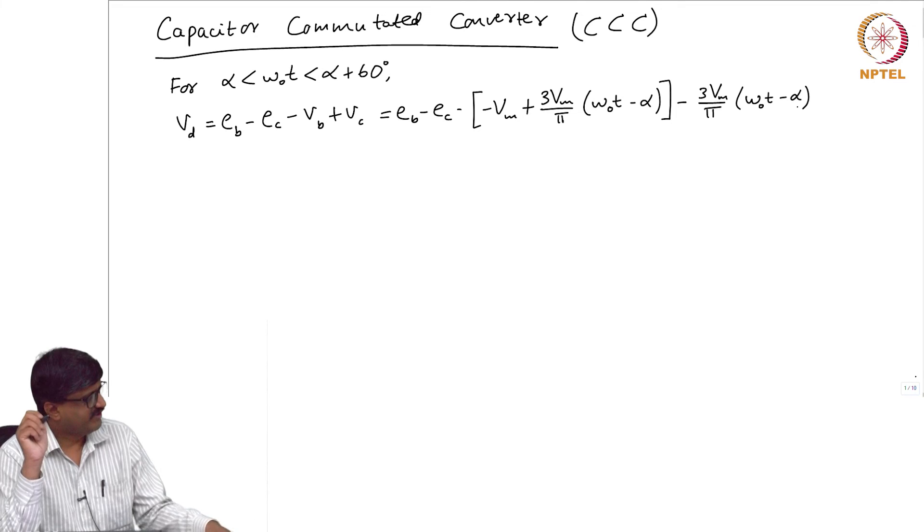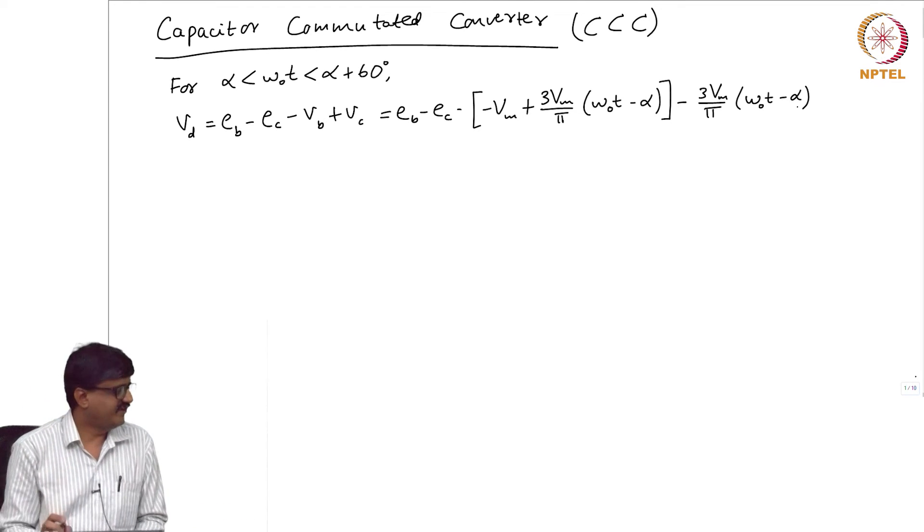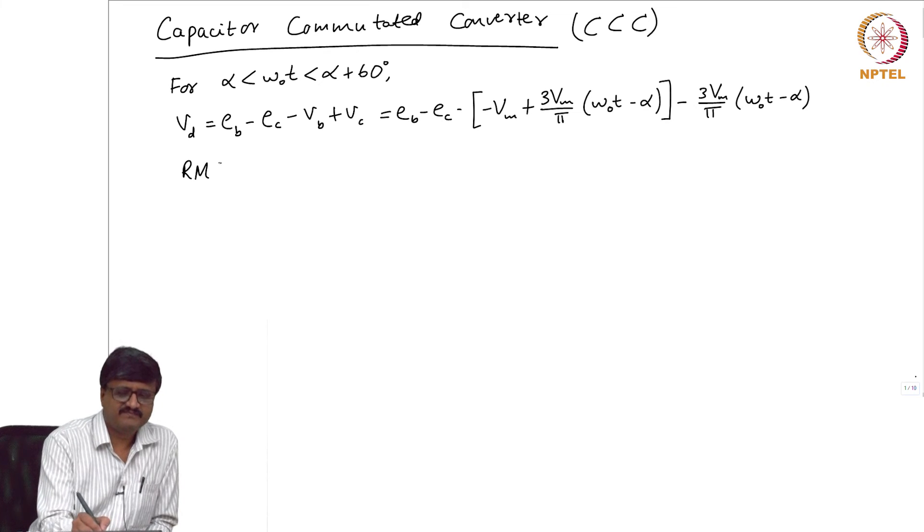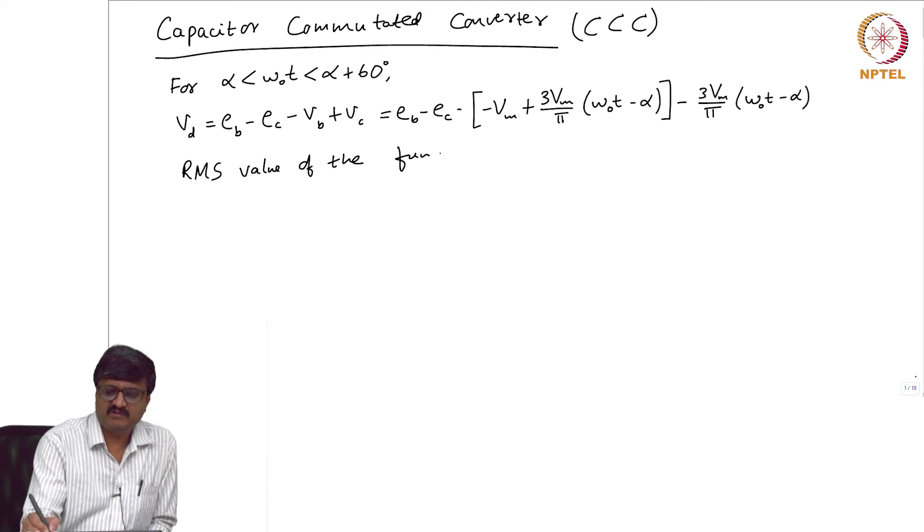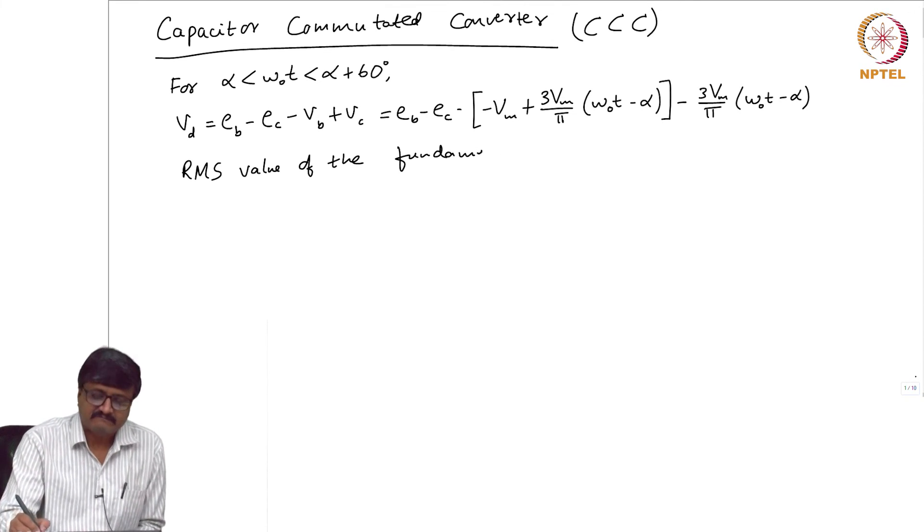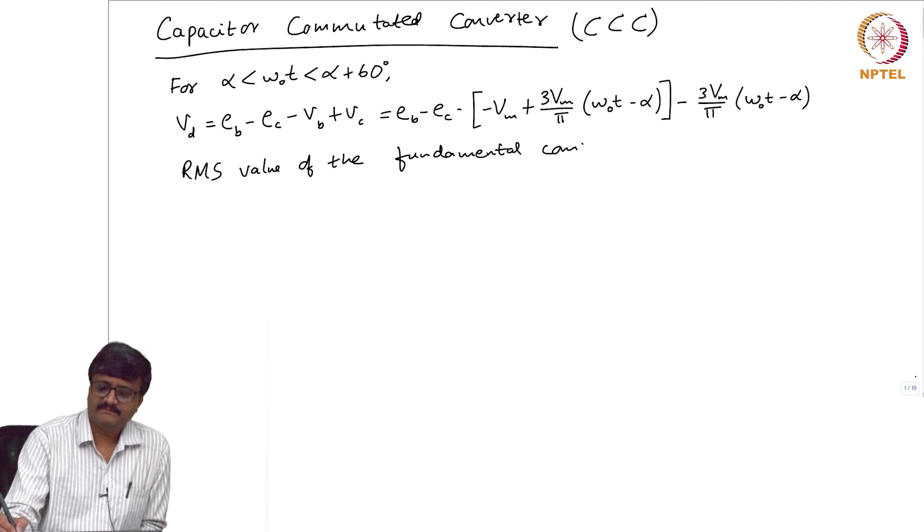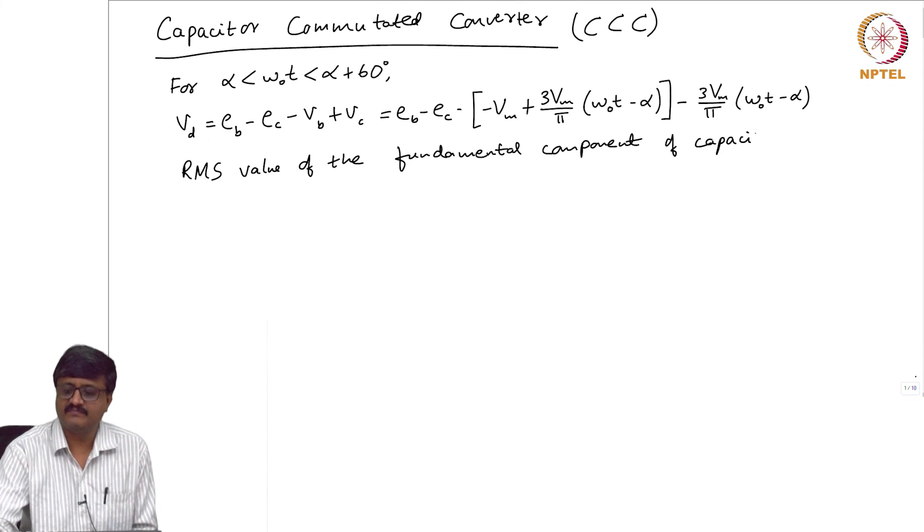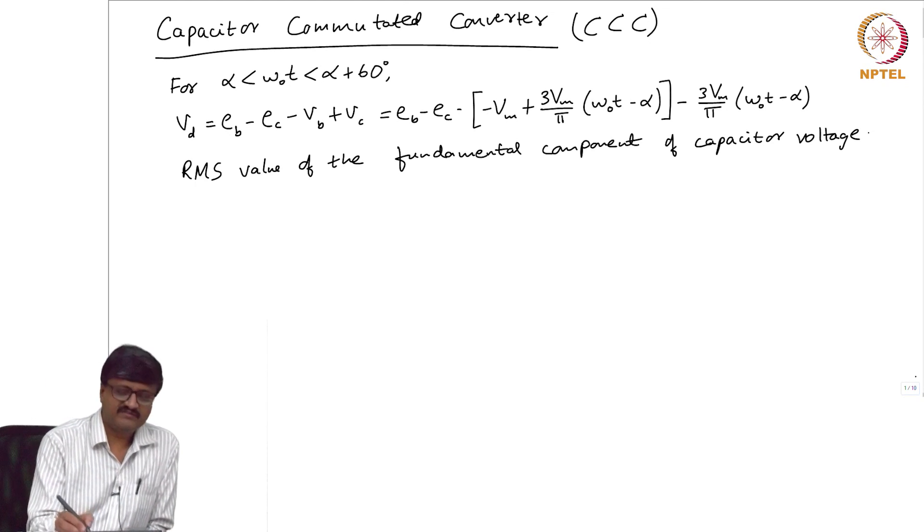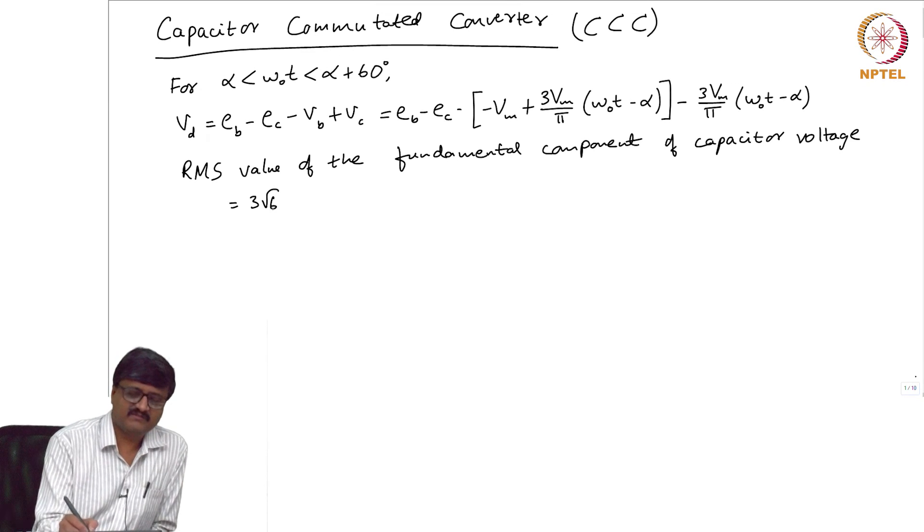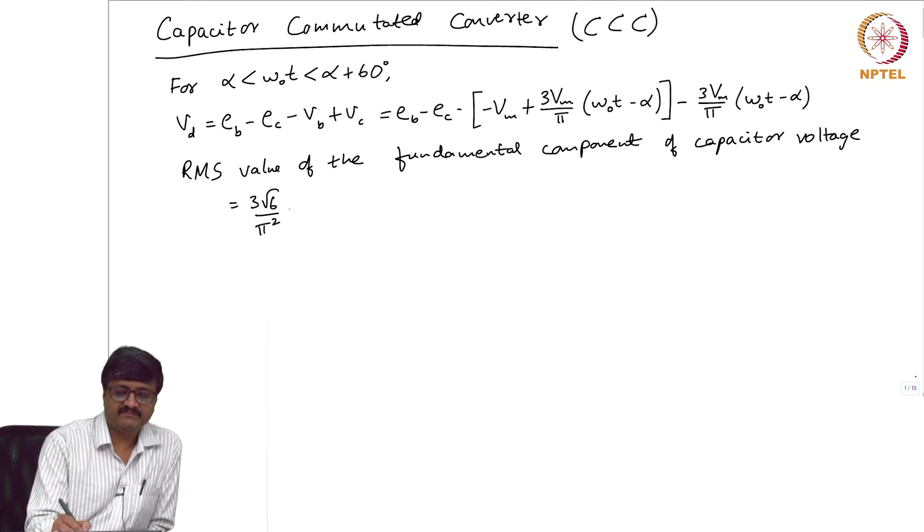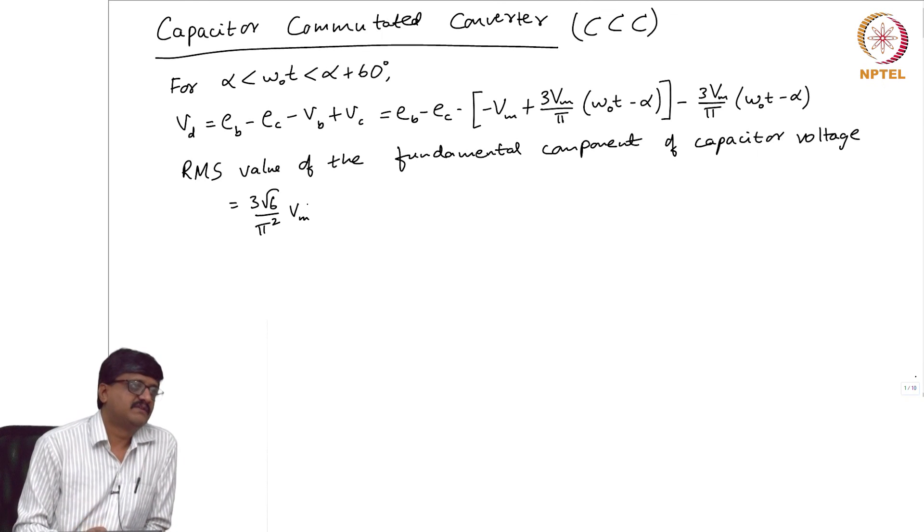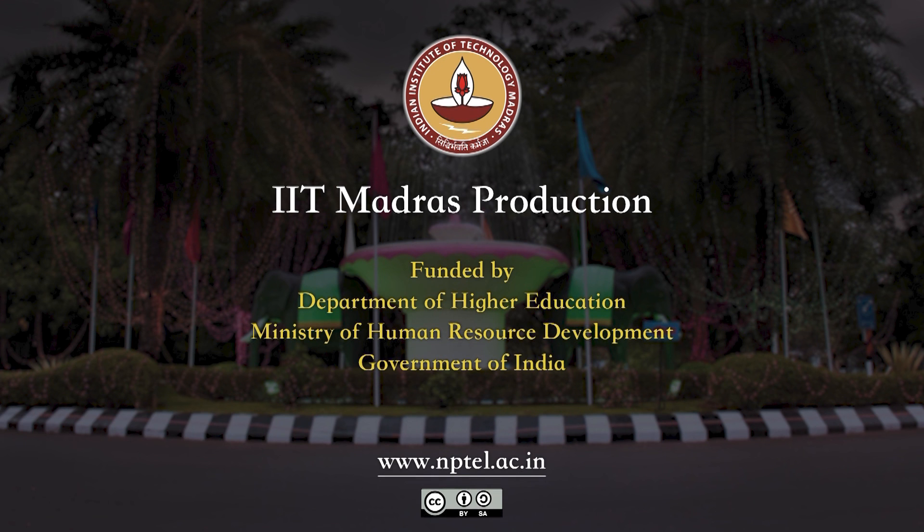Then what about the RMS value of the fundamental component of capacitor voltage? I will leave it to you to show that this is equal to 3 root 6 by pi square into VM. This I am asking you to do.